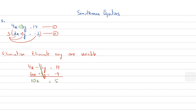So we now have 10x equals 5, which means x is equal to 5 over 10, which equals 0.5 — or you can write it as one half. Now that we have the value of x, we can very conveniently figure out the value of y.